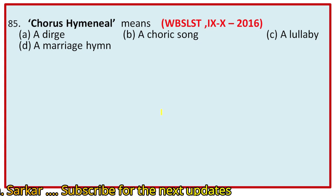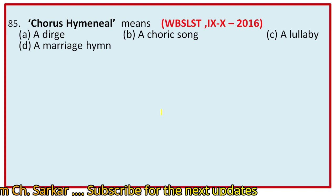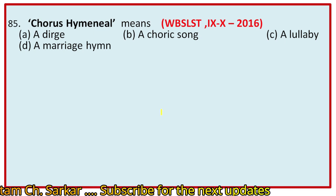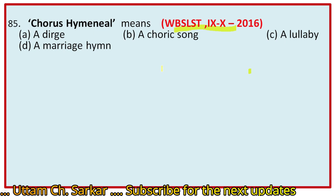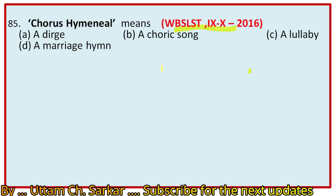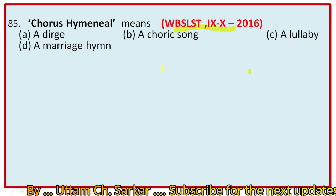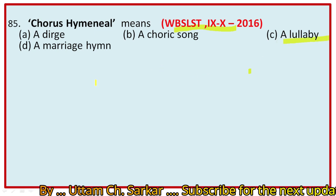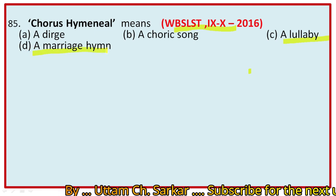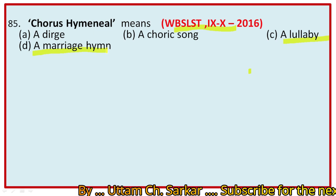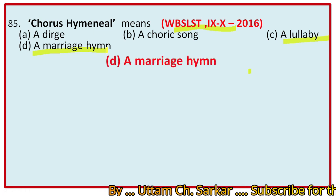Question 85: 'Chorus hymeneal' means — options: a dirge, a choric song, a lullaby, a marriage song. This question was selected in WB SLST 2016. A dirge is a funeral song, a choric song is a song of the chorus, a lullaby is a song to send a child to sleep. 'Chorus hymeneal' comes from the word 'hymen,' and Hymen is the god of marriage in Greek mythology. So the right option is D, a marriage hymn.